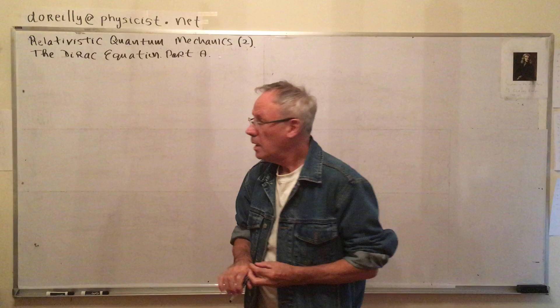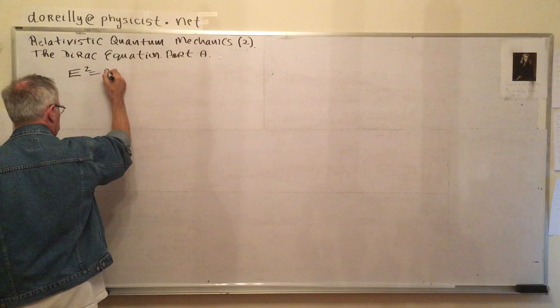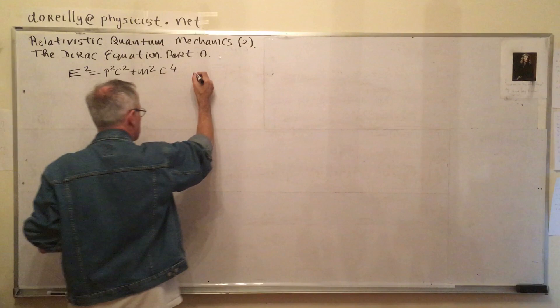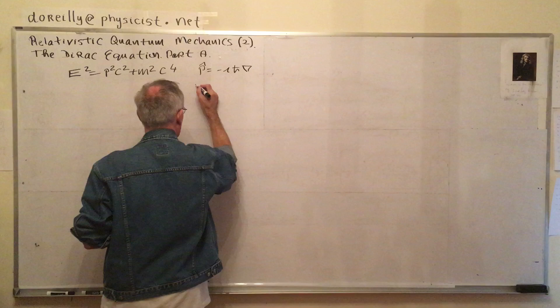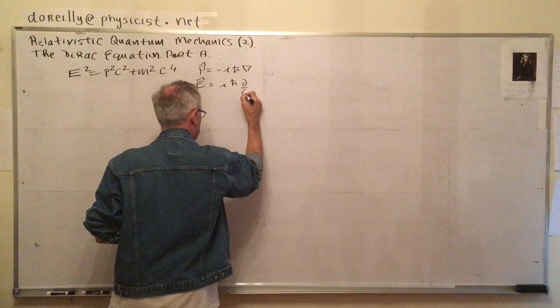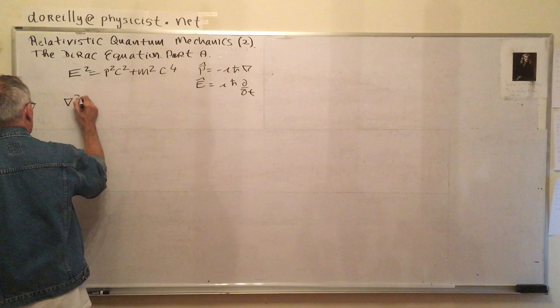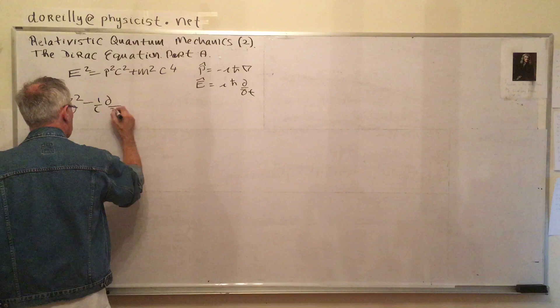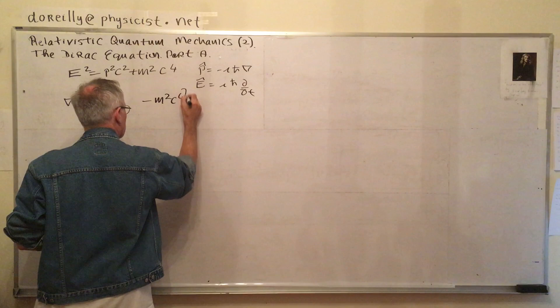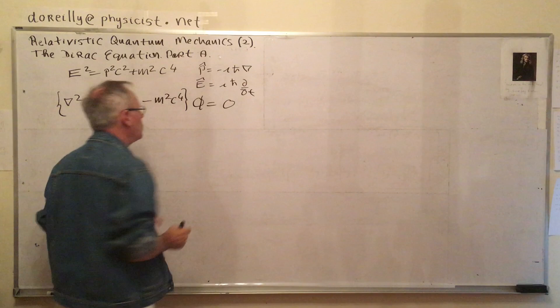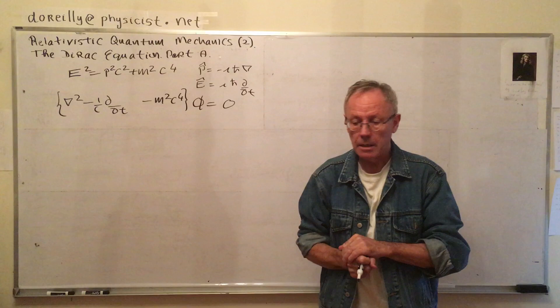The Klein-Gordon equation arises out of the energy equation E² = p²c² + m²c⁴, where we put in for the operators E and P. And we arrive at the Klein-Gordon equation which has a solution which is a scalar field.